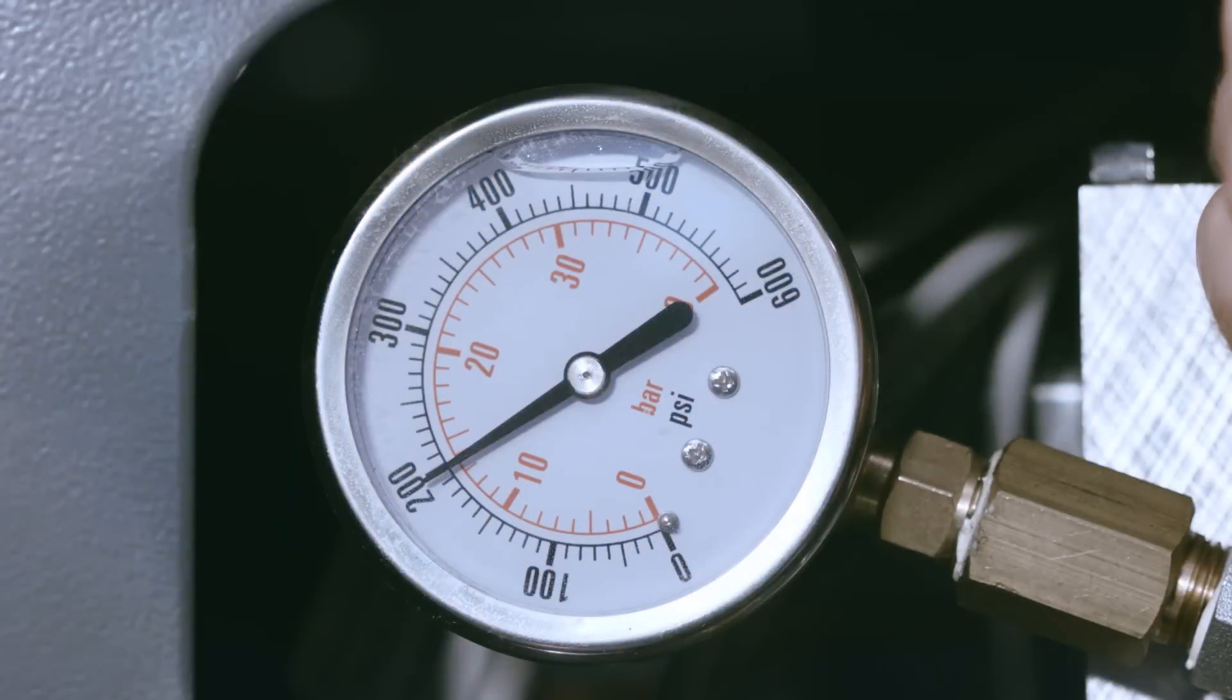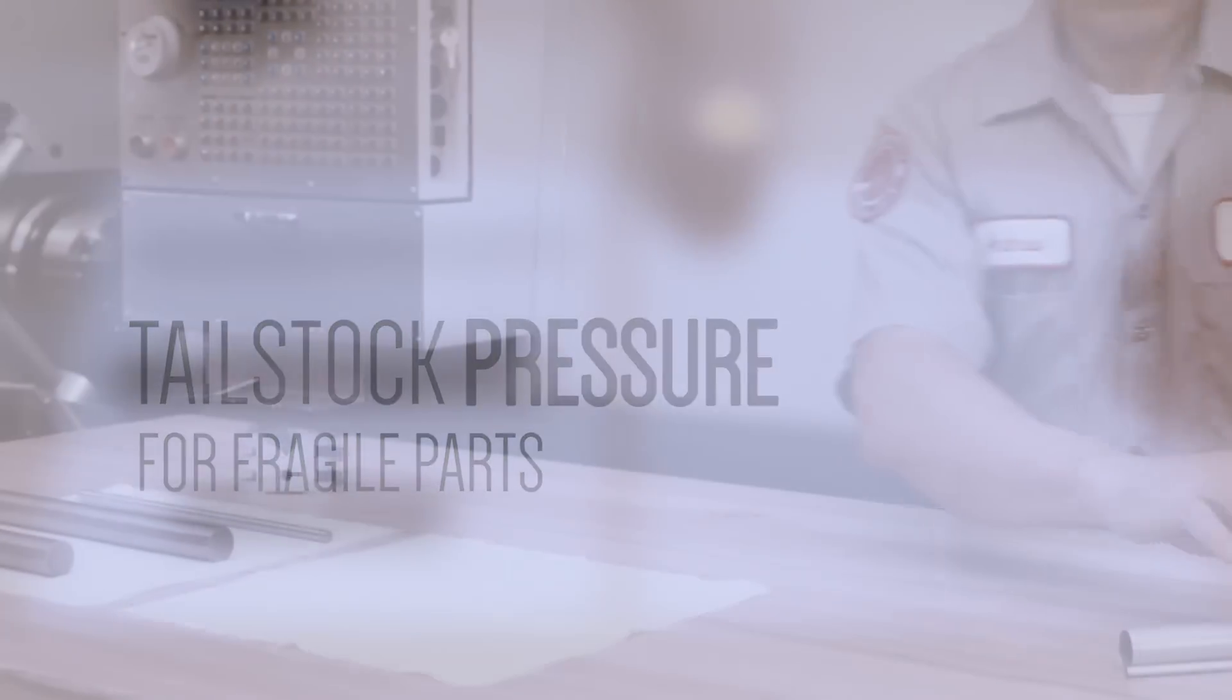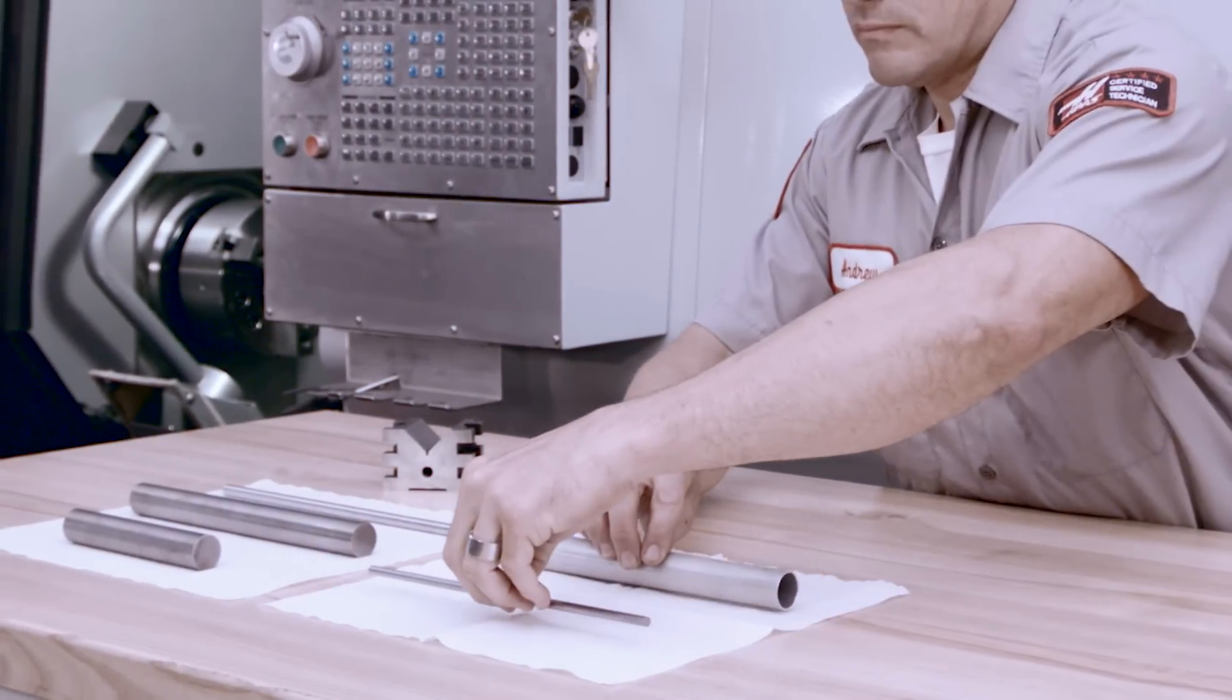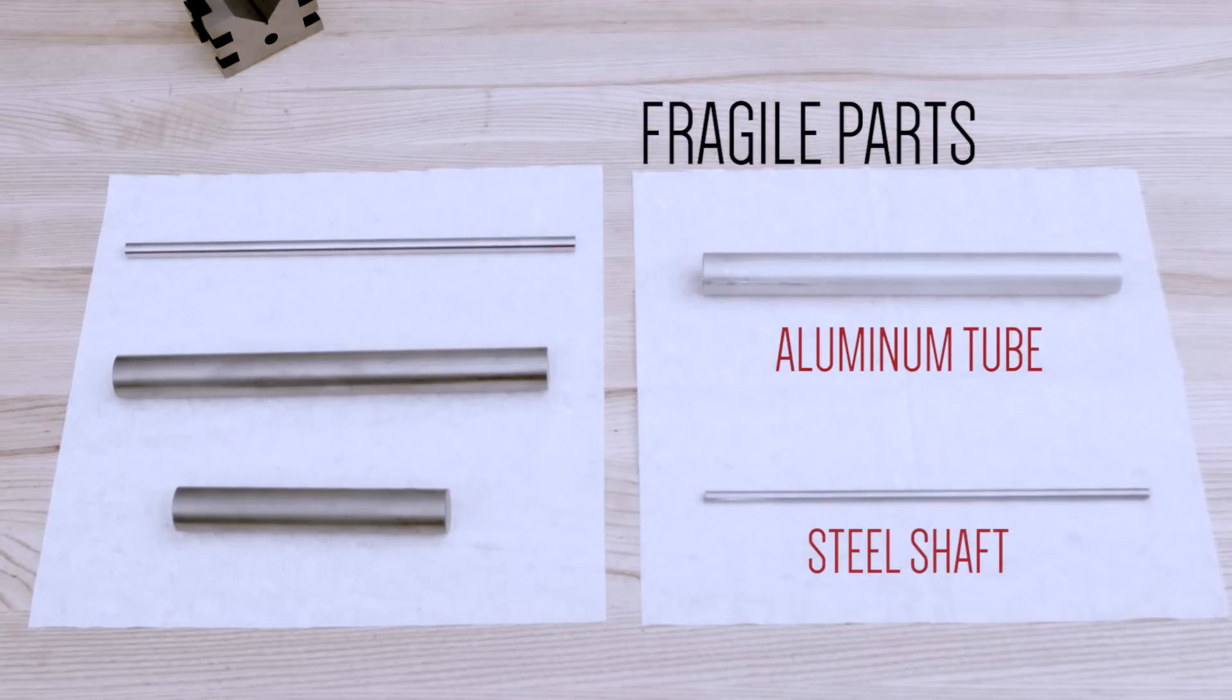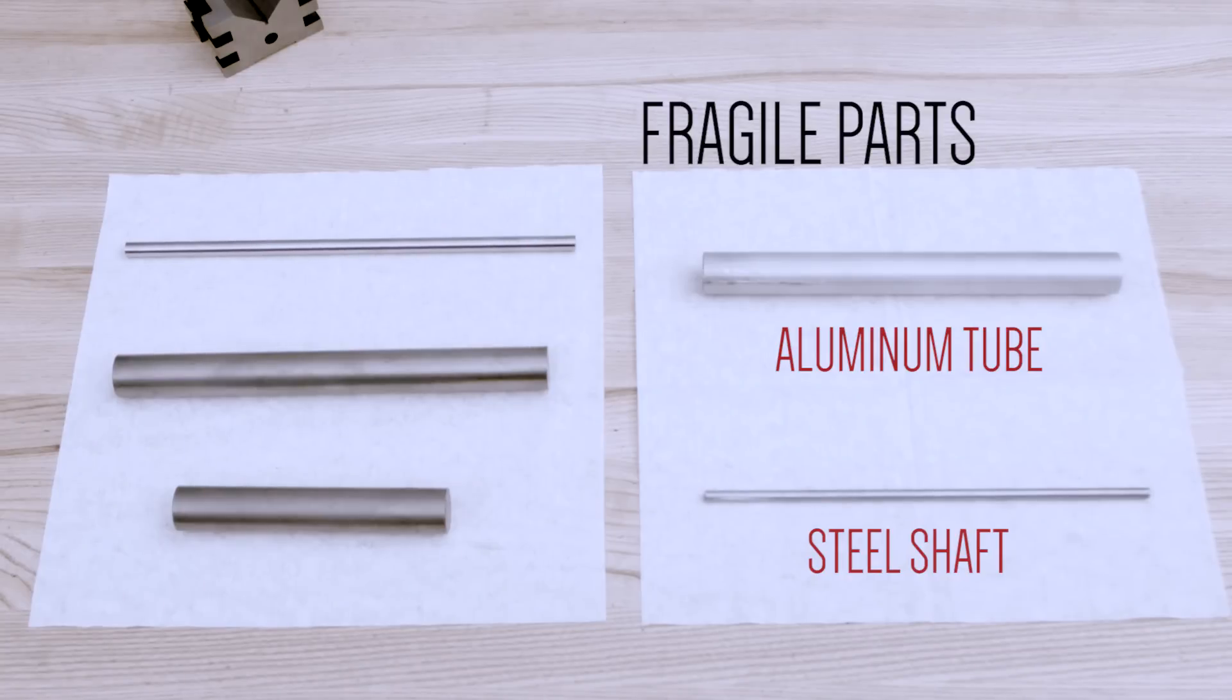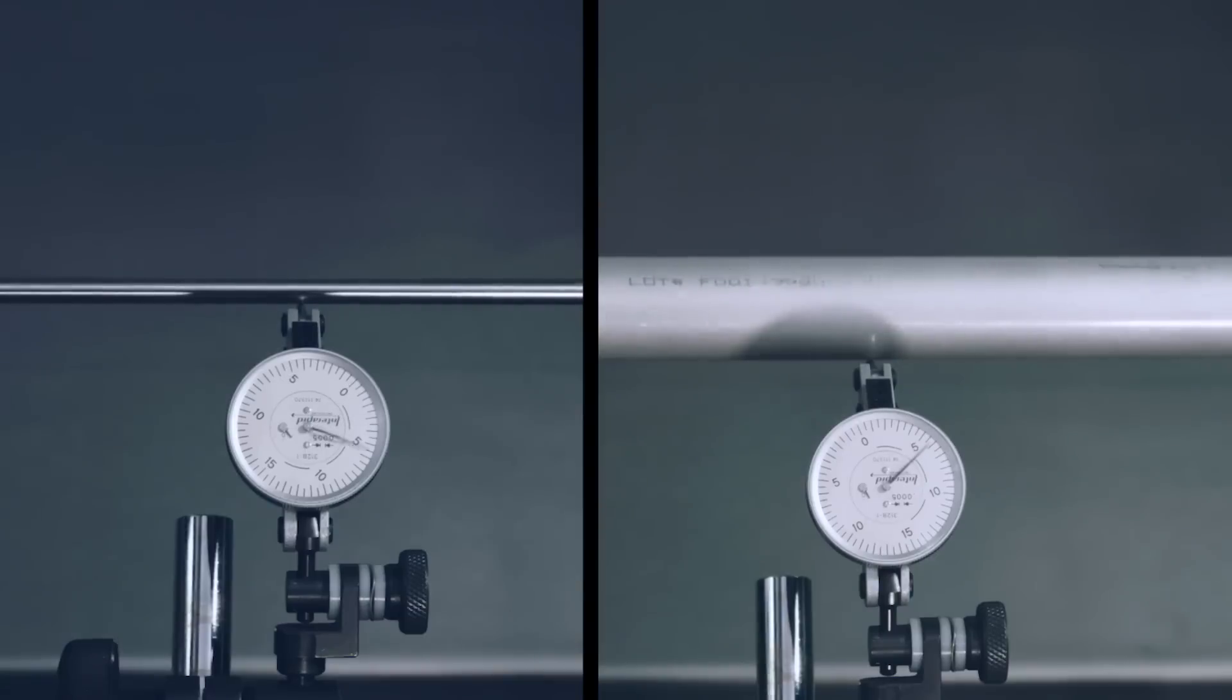To recap, for stout parts, we just recommended a tailstock pressure of 200 psi as a good baseline. But with fragile parts, this doesn't always work. Here we have a quarter inch diameter steel shaft and a 49 thou wall one inch diameter aluminum tube. How much pressure will it take to deform them?